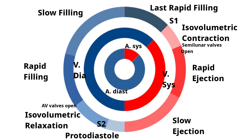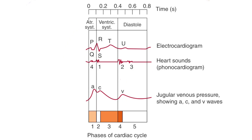This is basically the phases of the cardiac cycle. Now let's look at the cardiac cycle in this table. The phases are: 1 — atrial systole; 2 — isovolumetric contraction of the ventricle; 3 — ejection phase; 4 — isovolumetric relaxation of the ventricles; and 5 — ventricular filling phase.